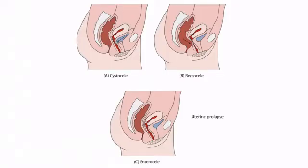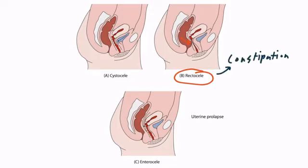The top right image demonstrates a rectocele. When the rectum pushes anteriorly, bulging into the posterior vaginal wall, the patient may experience constipation. In fact, sometimes patients find that they need to place their finger in the vagina and push backward against the posterior vaginal wall in order to release the stool. A rectocele can also lead to a weak anal sphincter and fecal incontinence, though constipation is much more likely.